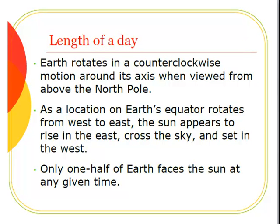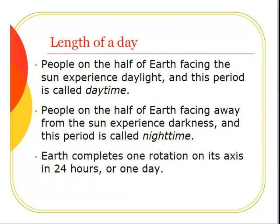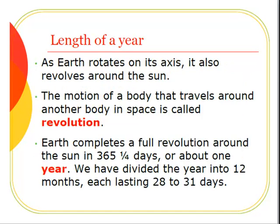Only one half of Earth faces the Sun at any given time. People on the half of Earth facing the Sun experience daylight, and this period is called daytime. People on the half of the Earth facing away from the Sun experience darkness, and that's called nighttime. Earth completes one rotation on its axis in 24 hours, or one day.